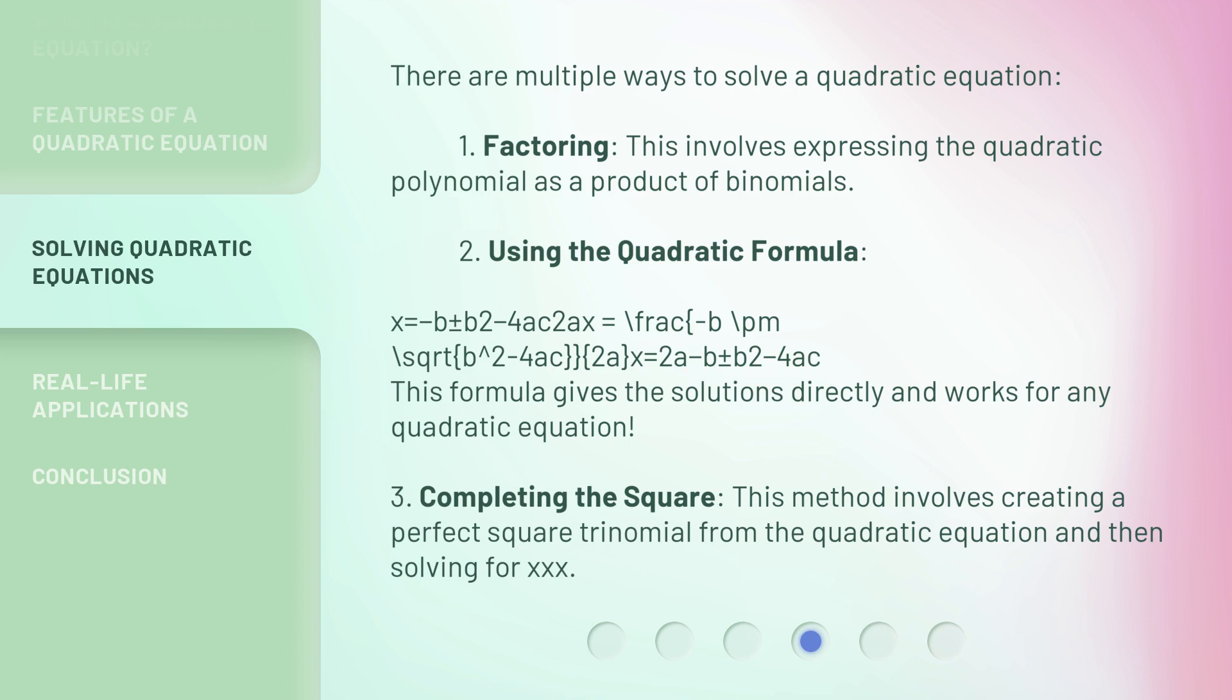3. Completing the square. This method involves creating a perfect square trinomial from the quadratic equation and then solving for x.